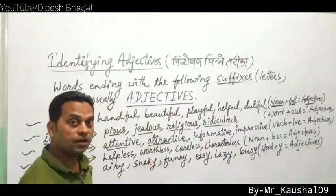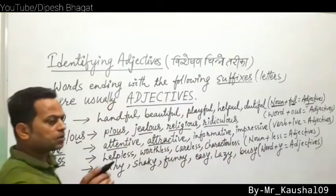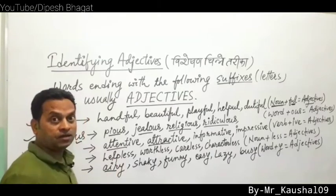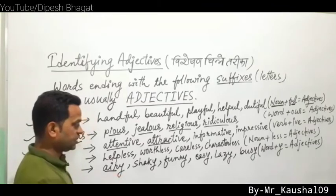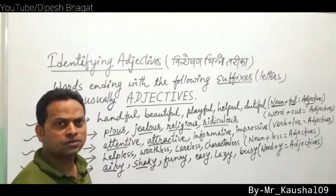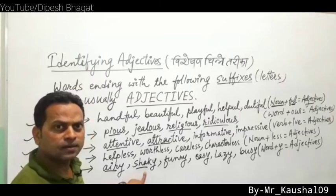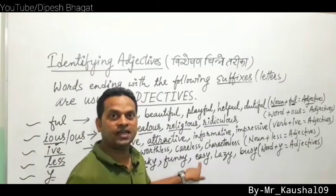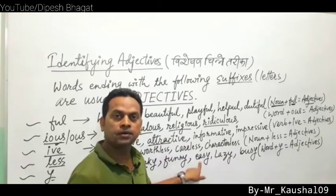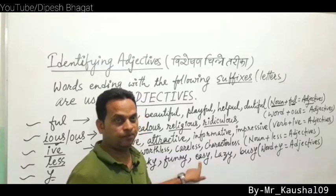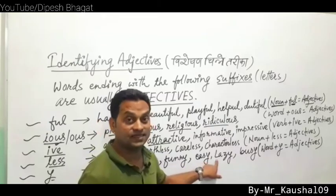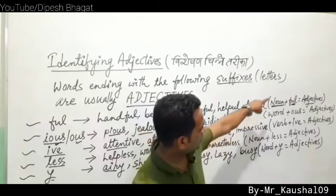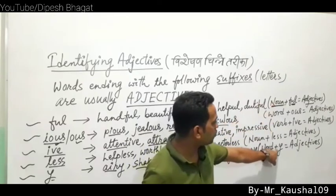Next suffix: word plus -y equals adjective. Examples: air (noun) → airy; shake (verb) → shaky; fun → funny; ease → easy; laze → lazy; bone (noun) → bony. So noun or verb plus -y forms an adjective.